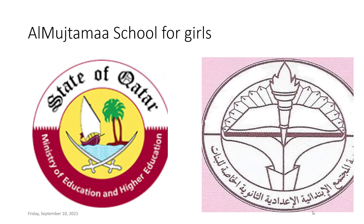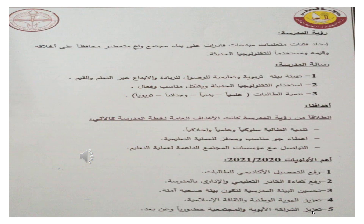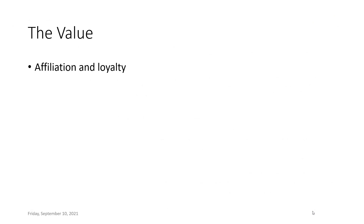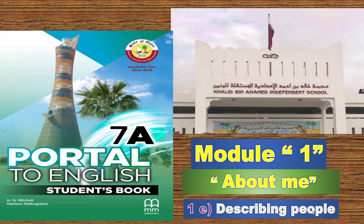Good morning, dear students in grade 7. The school vision is to prepare creative, well-educated students who are able to establish a civilized, aware, reserved society, sticking to authentic morals and values, using modern technology. The value is affiliation and loyalty. Our lesson today is Module 1, 1E — Vocabulary and Speaking.